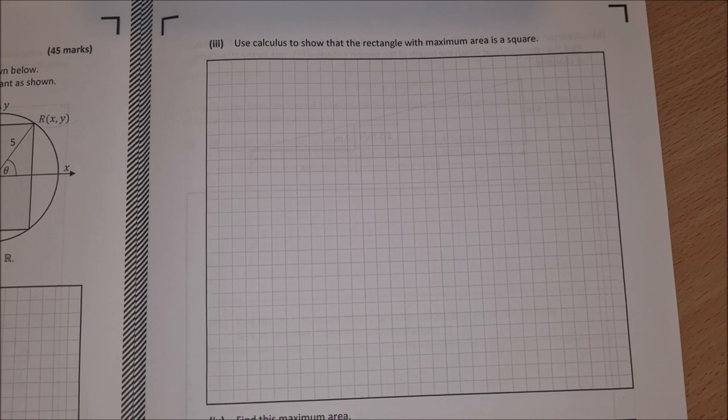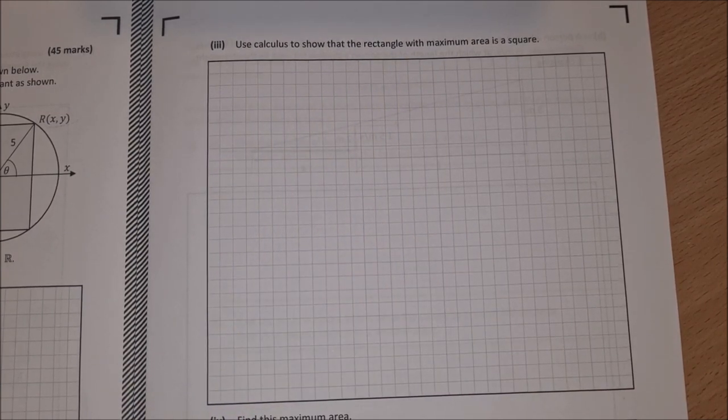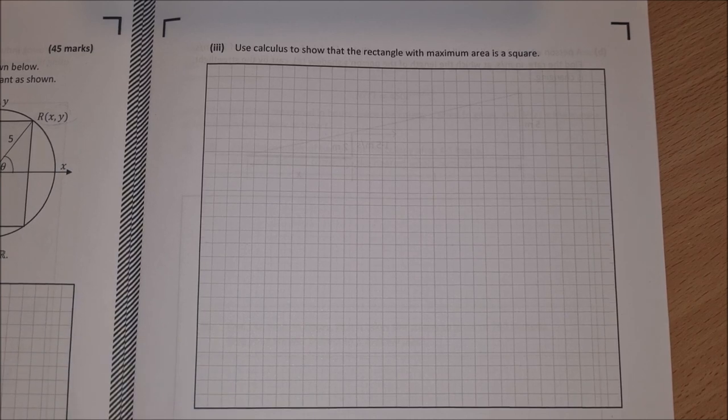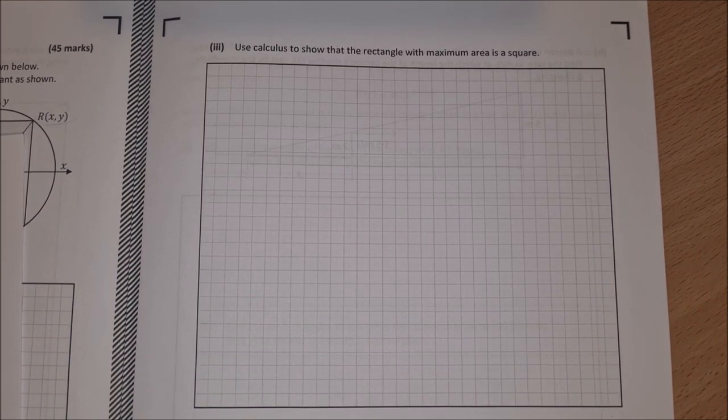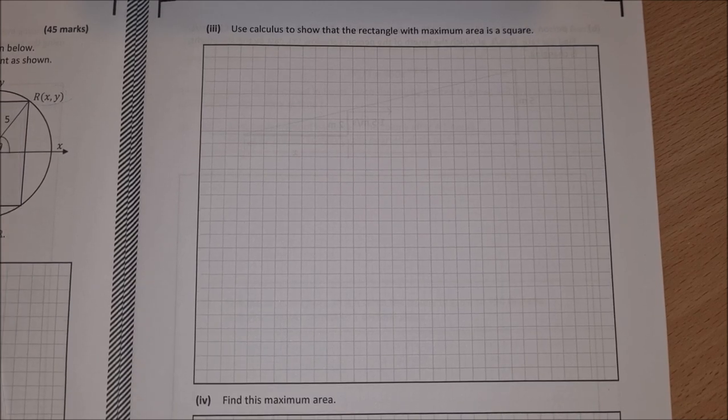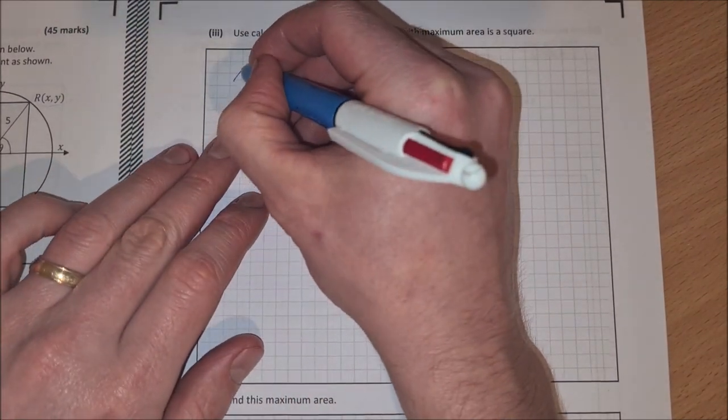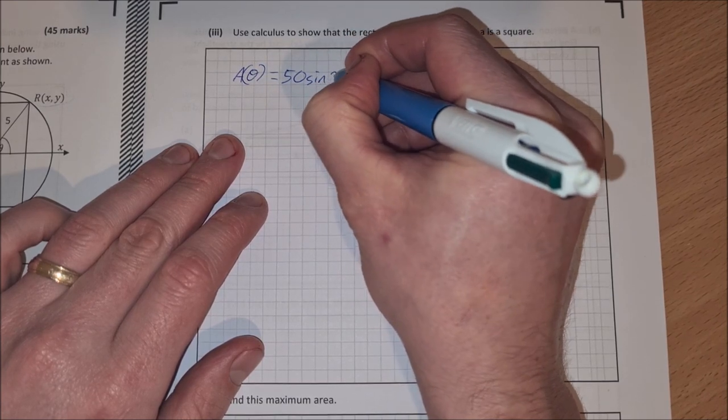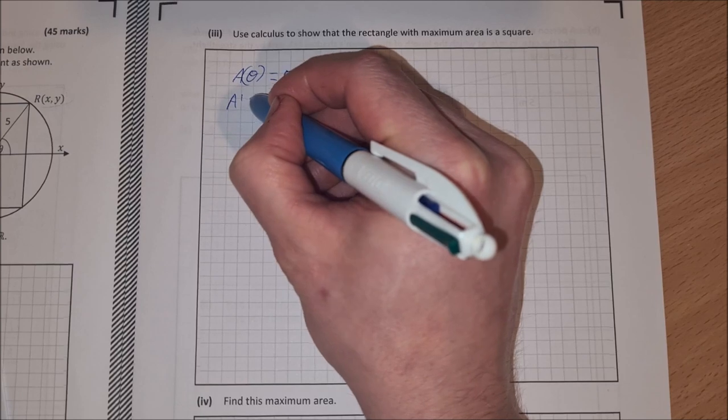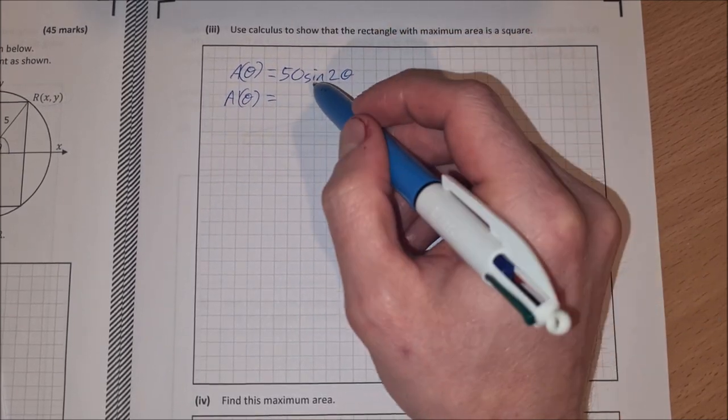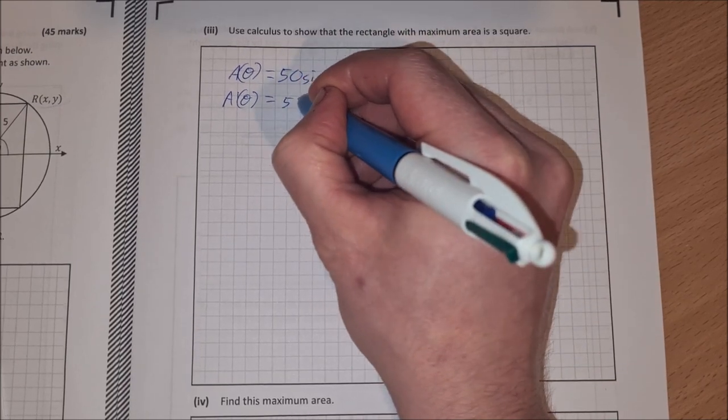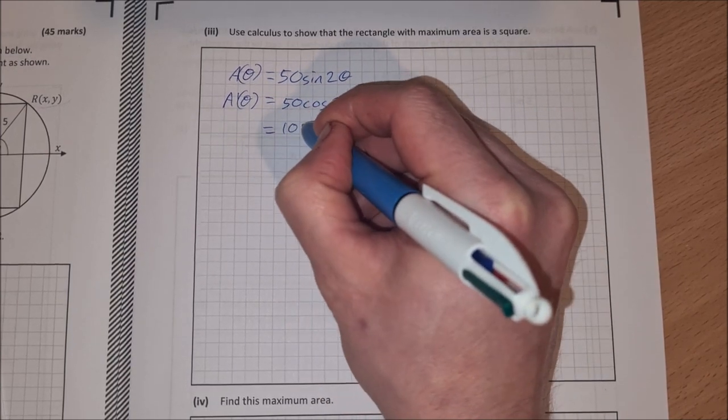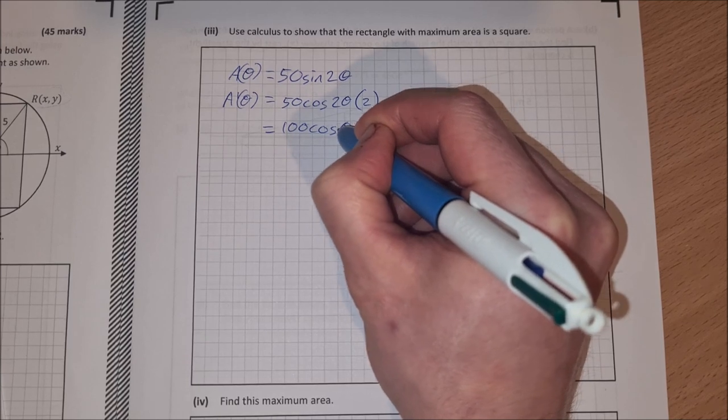Part 3 then says, use calculus to show the rectangle with maximum area is a square. So you hopefully should know from your calculus that the area of any rectangle, the maximum area is a square. So we just have to do that with this function. So we have A of theta is equal to 50 sine 2 theta. So we have to differentiate this. So A prime of theta. Now, when we differentiate 50 sine 2 theta, we get 50 cosine 2 theta multiplied by 2. So that's equal to 100 cosine 2 theta.